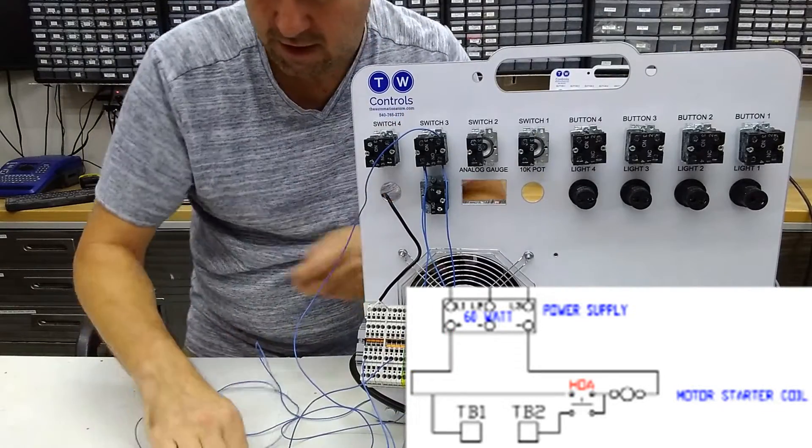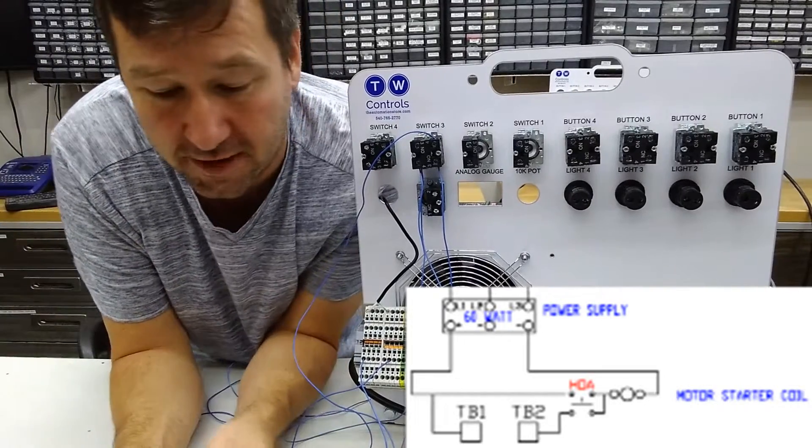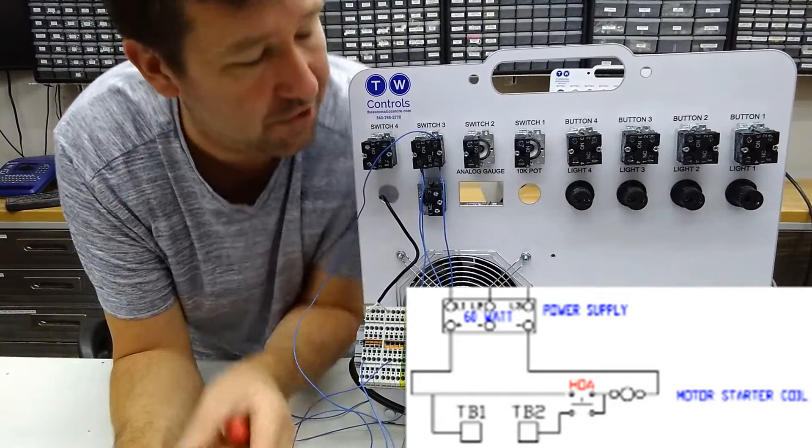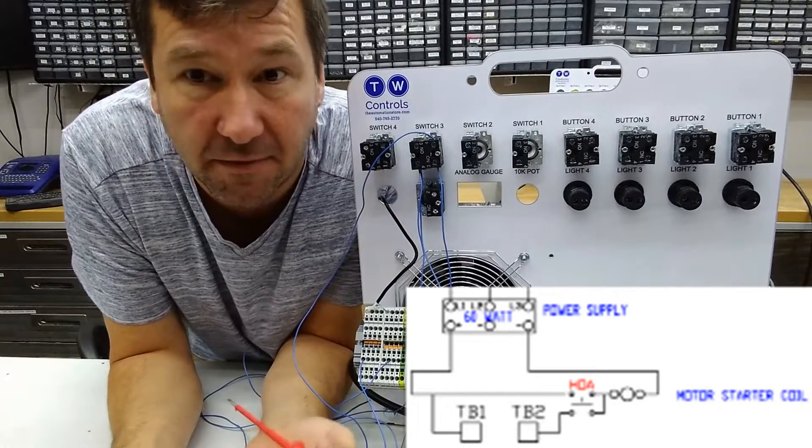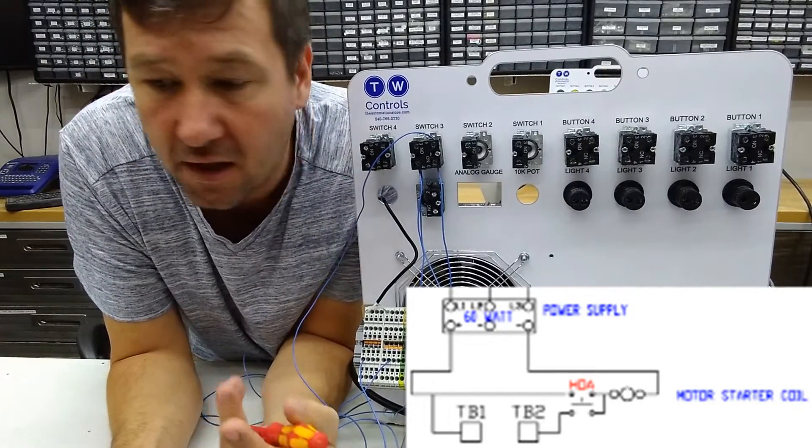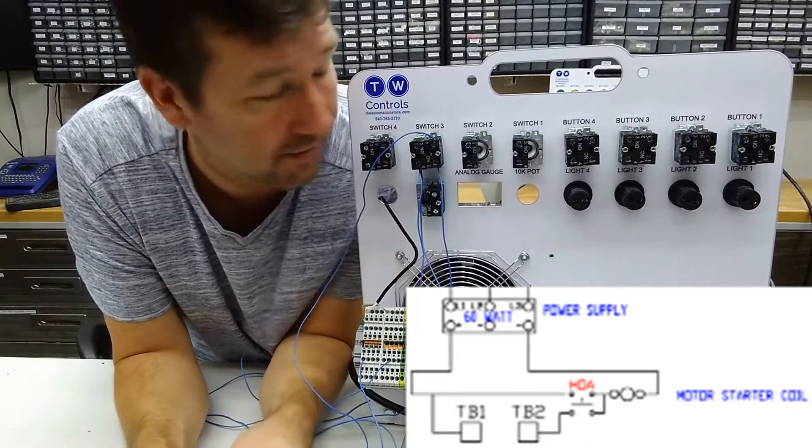But now for the auto. And you notice in the auto, there's just kind of two wires going out to a set of terminals. And this is typically what you would see. So these two terminals would continue on to say maybe a float switch in a pump station, or something that will automatically operate this system.